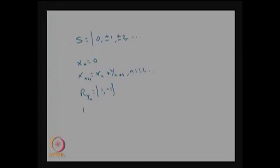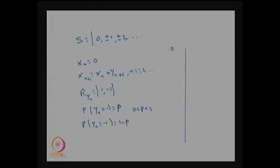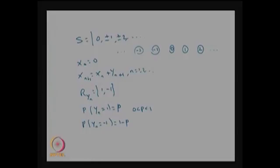The probability that yn takes value +1 is p and value -1 is 1-p, with p ∈ (0,1). Using this, the one step transition probability of moving from state 0 to state 1 can be computed: if xn = 0 and y(n+1) = 1 with probability p, then x(n+1) = 1 with probability p.